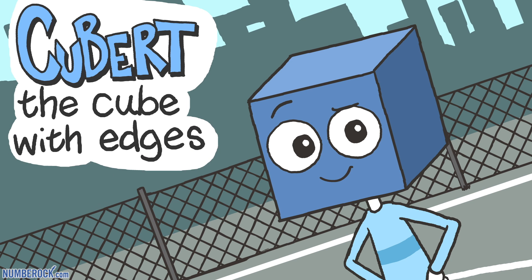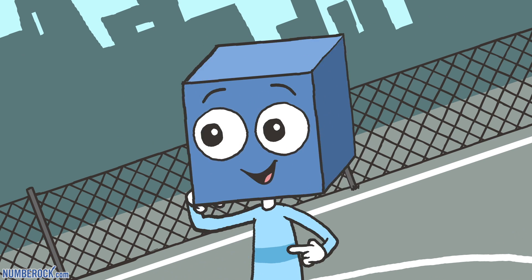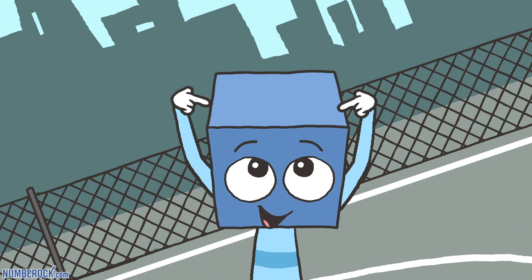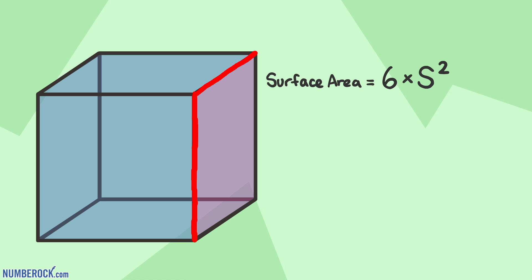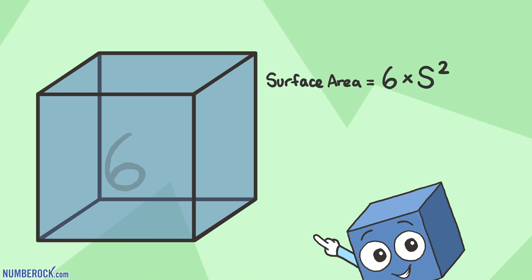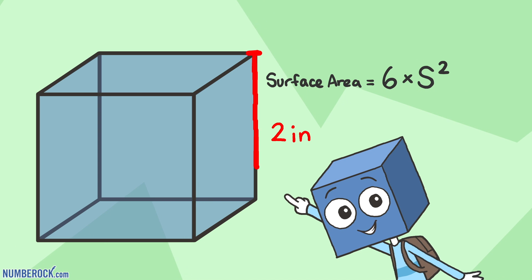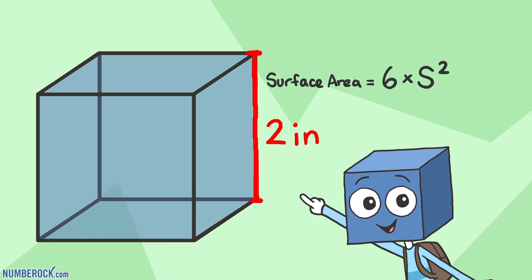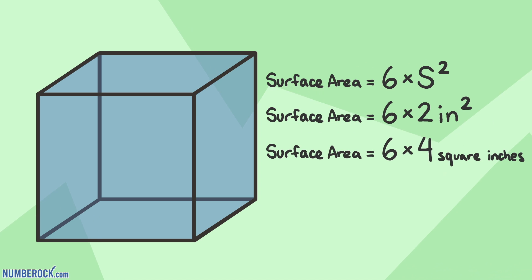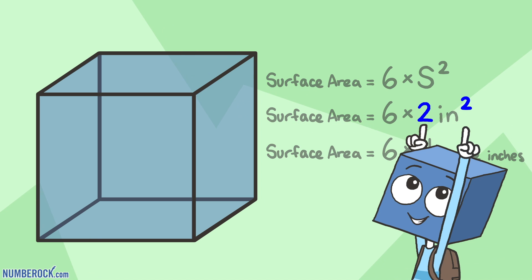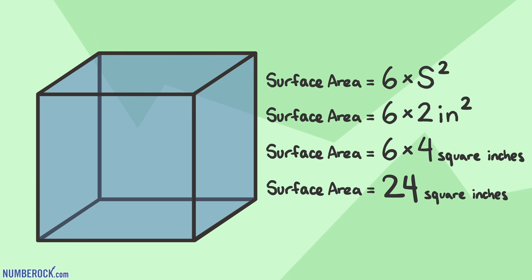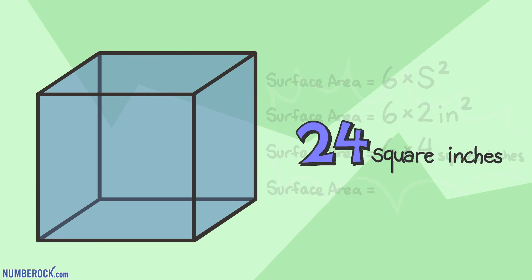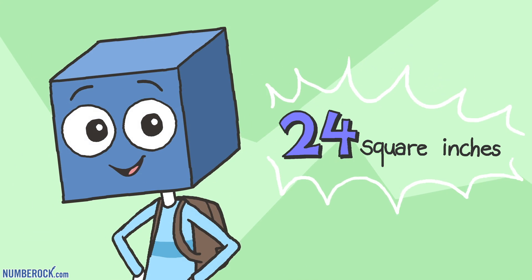Qubert the cube with edges so fine said each of my sides perfectly aligned. Measure one edge, then make it a square, multiply by six and you're almost there. Each of my edges is two inches, so here's what to do: multiply and get four square inches — that's two times two. Then multiply by six and the product's twenty-four. My surface area's twenty-four square inches, for sure.